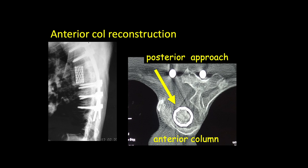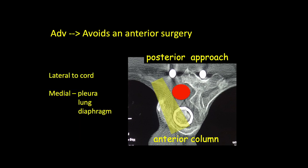We can approach the anterior column and reconstruct it via the posterior approach and achieve good global fusion. The approach is far lateral, where we access the anterior column lateral to the cord and medial to the important vital structures like the pleura, the lung, and the diaphragm.